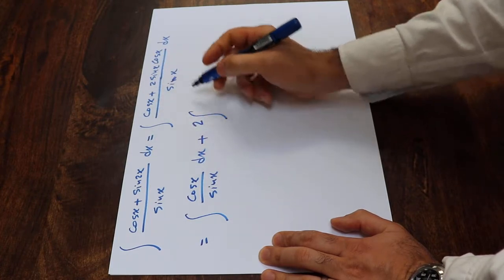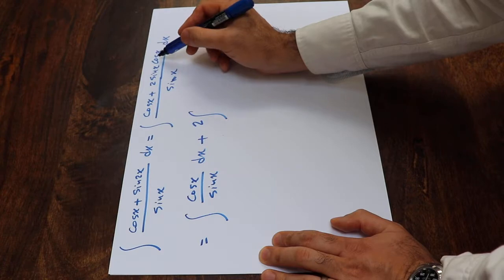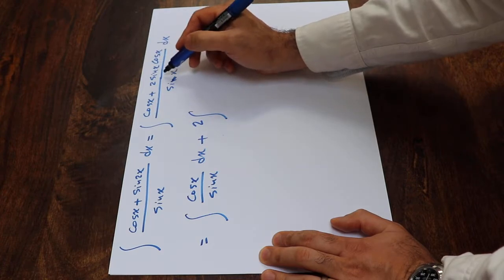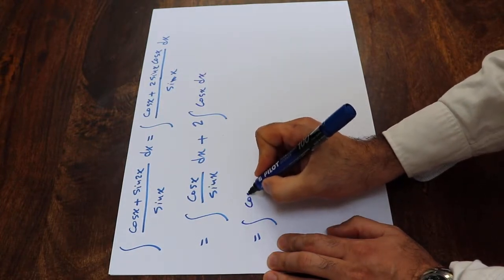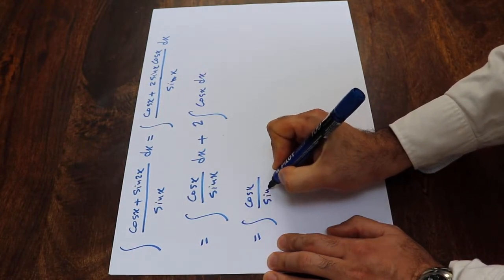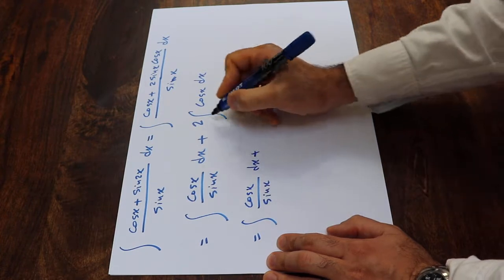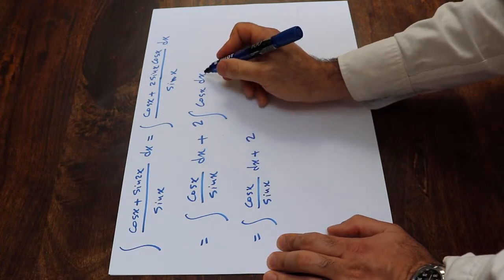I take it out of the integral, 2 integral of sine x cosine x divided by sine x, so sine x will cancel out, that will be cosine x dx, which will be equal to integral of cosine x divided by sine x dx plus 2 integral of cosine x dx.